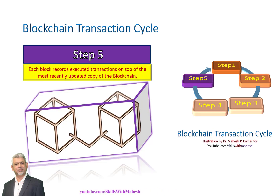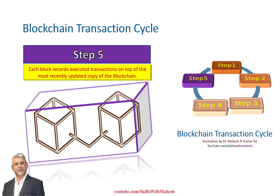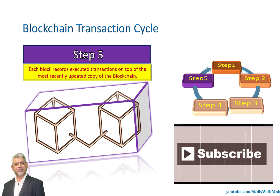Step 5, the last step in the blockchain transaction cycle: the block records the executed transaction on top of the most recently updated copy of the blockchain. This blockchain cycle continues to repeat itself. This is the high-level view of the blockchain transaction cycle, and in the next episode, we will talk about the encryption part, the cryptography part, and the network security part of blockchain.